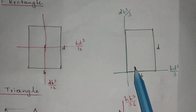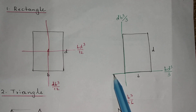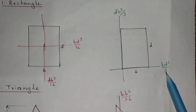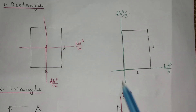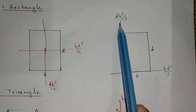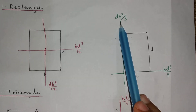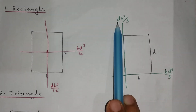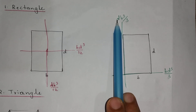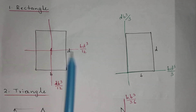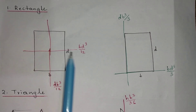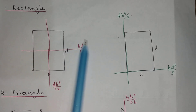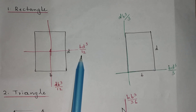For the rectangle, if you have the axis passing through one of the sides, the value is BD cube by 3. For the other side axis it will be DB cube by 3, because the side parallel to that axis is D, so that term should be written first. The moment of inertia about the centroidal axis is more important because we will be using this value when we apply the parallel axis theorem.